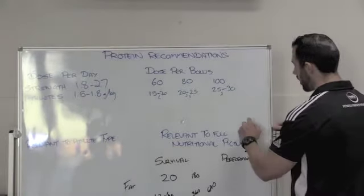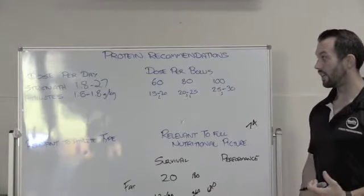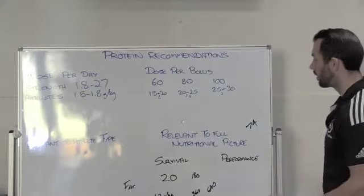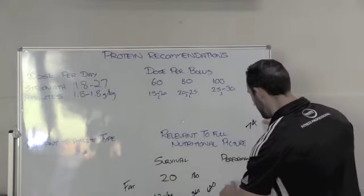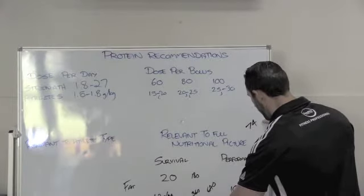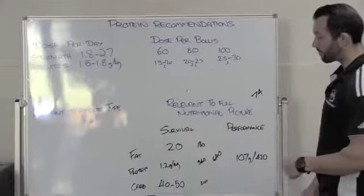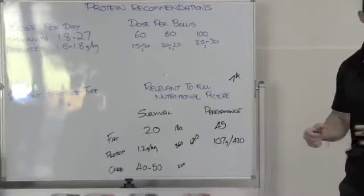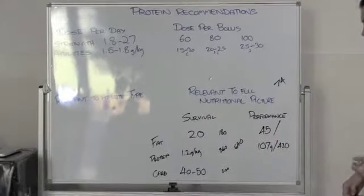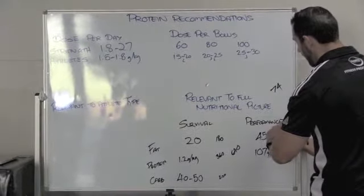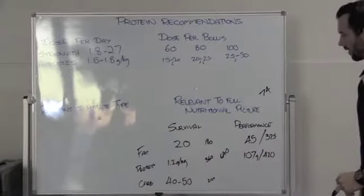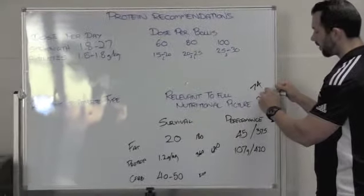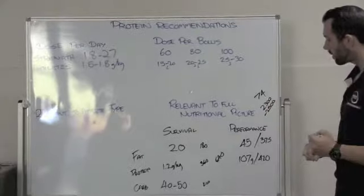Let's make it simple. If we have a 74 kilo athlete who's not trying to get massive, just wanting to stay lean and train with performance — eating 1.5 grams of protein per kilo, that's around 107 grams of protein, which is about 420 calories. Say we want him to have around 45 grams of fat for essential and saturated fatty acids — times by 9, that's around 375 calories. Carbohydrate is the leftover. This person would probably need about 2,300 to 2,500 calories for training demands.